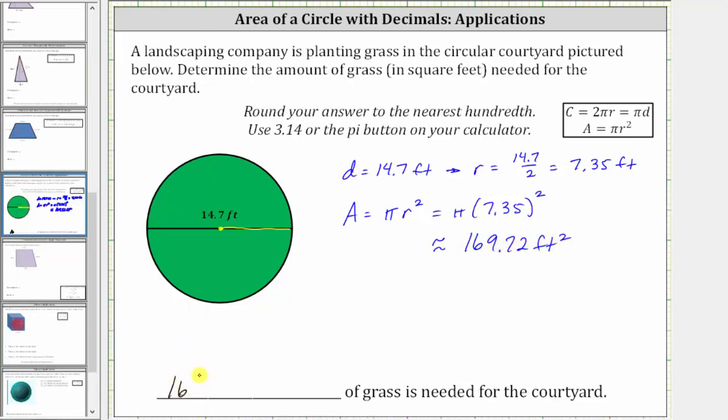Which means 169.72 square feet of grass is needed for the courtyard. I hope you found this helpful.